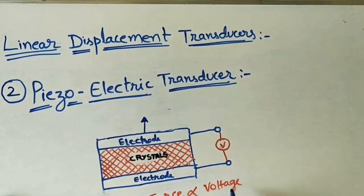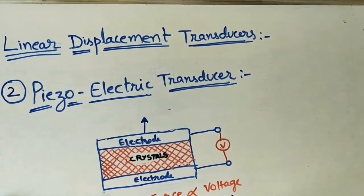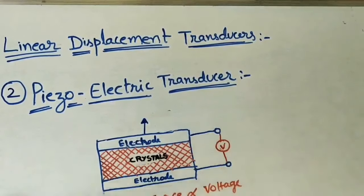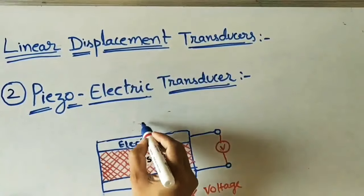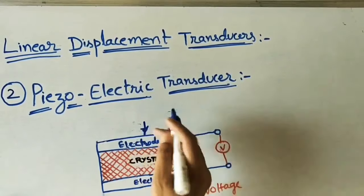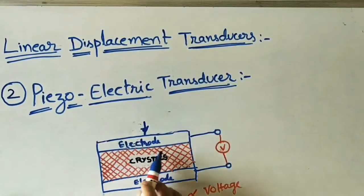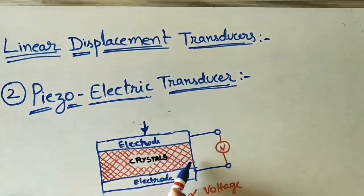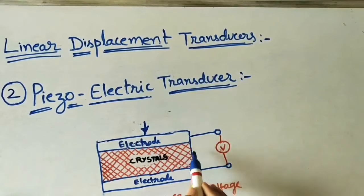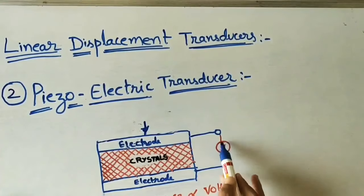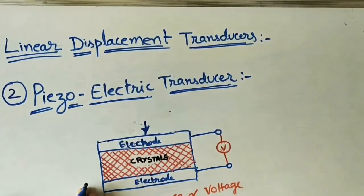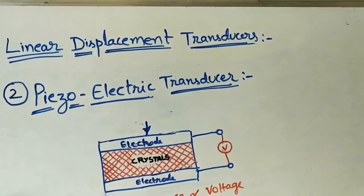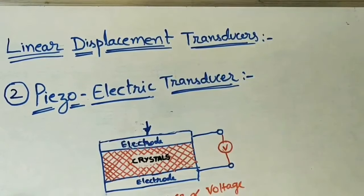So we are seeing two cases — force versus voltage, or vice versa. In the first case, an unknown force is applied; because of this, electric charge develops inside and we can see the electric voltage at the output terminals. This is the working method of the piezoelectric transducer.